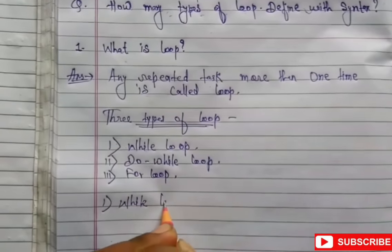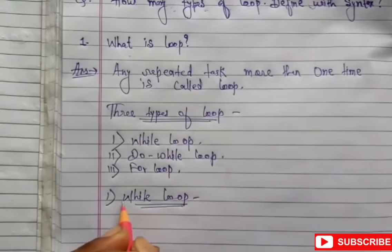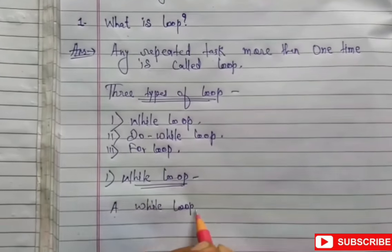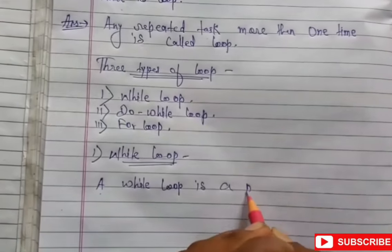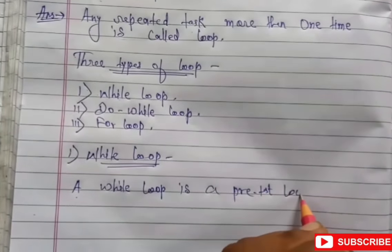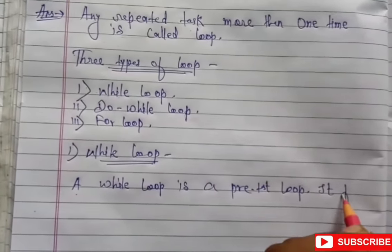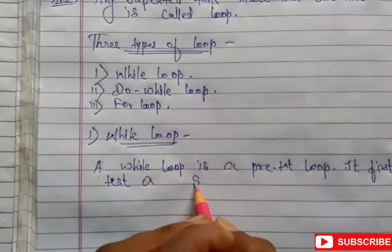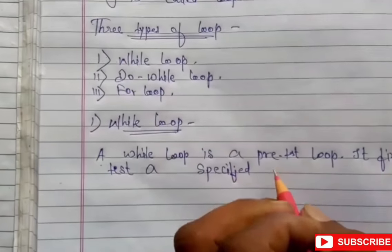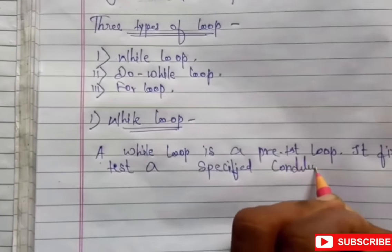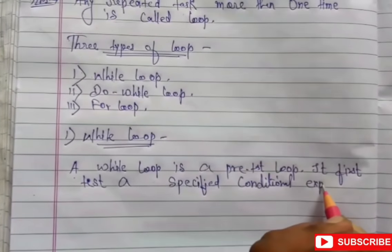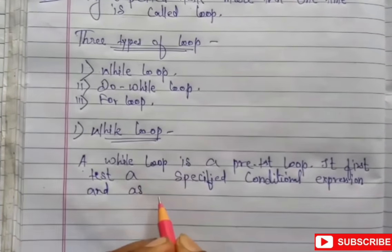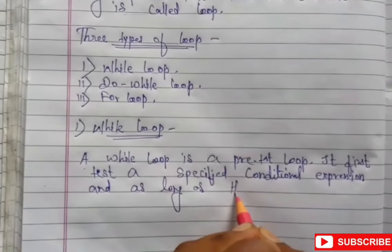So here we discuss about the while loop. A while loop is a pre-test loop. It first tests a specified conditional expression, and as long as the condition expression is true, the loop body executes.